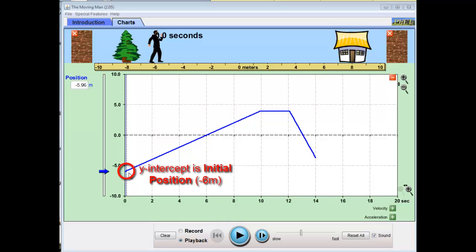Now let's examine what happens as he walks. I've got three regions here, 0 seconds to 10 seconds, he has a certain kind of motion. Between 10 and 12 seconds, he has a different motion. And between 12 and 14 seconds, again, a different motion.